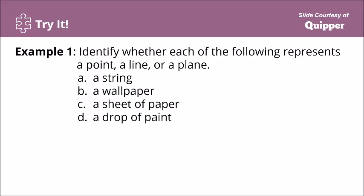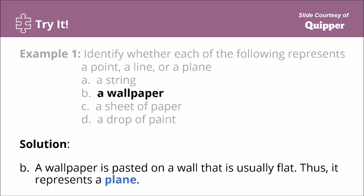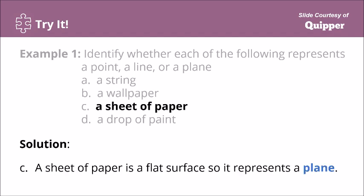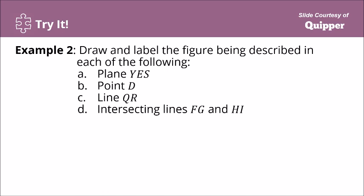Let's try this: identify whether each of the following represents a point, a line, or a plane. A string, a wallpaper, a sheet of paper, and a drop of paint. A string is usually long and narrow, therefore it most likely represents a line. A wallpaper is pasted on a wall that is usually flat, so it represents a plane. A sheet of paper is a flat surface, so it represents a plane. A drop of paint — since only a drop is indicated — it most likely represents a point.